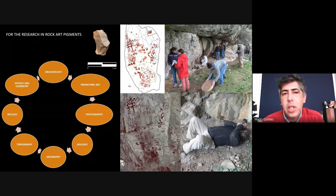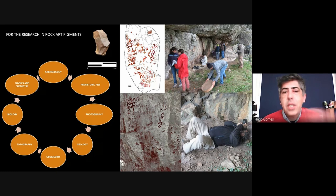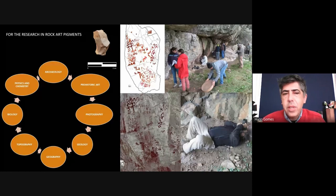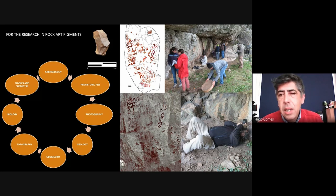As Sarah said, this is a multidisciplinary approach based on archaeology. The questions we try to solve are mainly archaeologists' questions related with paintings and engravings — the style, the provenance of materials, the constitution of these pigments. We use photography, geology, geography and topography of the landscape and the sites. We also joined biology because many of these sites have biological colonizations like lichens, fungi, and other biological materials.